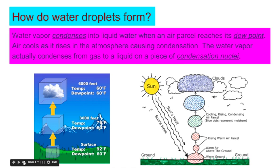How do water droplets form? Water vapor condenses into liquid water when an air parcel reaches its dew point. The dew point is when condensation occurs — that's a temperature. Air cools as it rises in the atmosphere, causing condensation. The water vapor actually condenses from gas to a liquid on a piece of condensation nuclei. So you can see here: surface temperature 92 degrees, dew point 60 degrees.